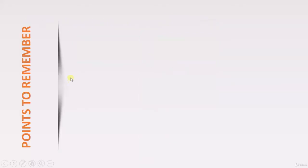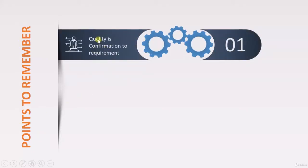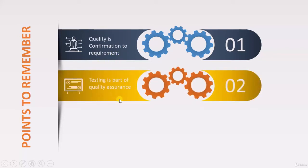The first important point to remember is that quality is conformance to requirements. When we talk about quality, that means whether we are fulfilling the requirement given by the customer. If we are fulfilling the requirement, that means the quality of your software is good. So quality is defined as conformance to requirements.